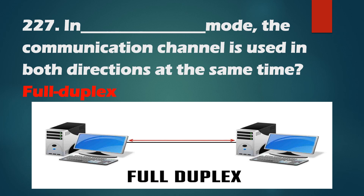Question No. 227: In Full Duplex mode, the communication channel is used in both directions at the same time. Full Duplex mode allows the communication channel to move on both sides simultaneously.